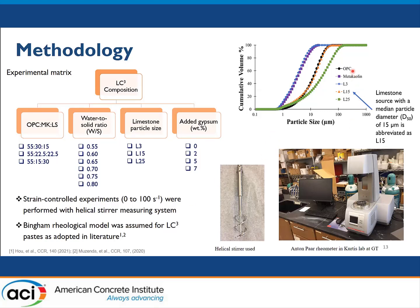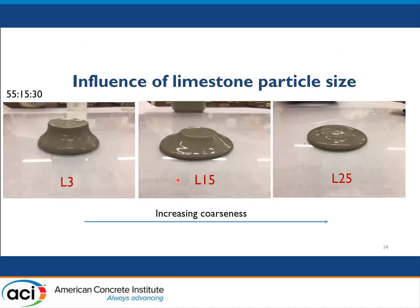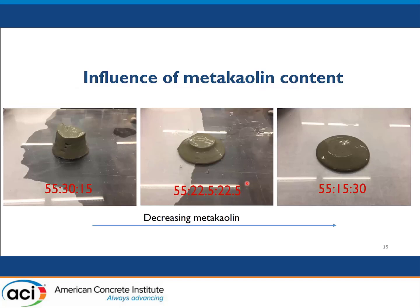The upper right figure shows the particle size distribution of OPC, metakaolin, and limestone. We have three different limestone grades: one finer than OPC, L15 which is similar to OPC, and L25 which has a coarser particle size distribution than OPC. The abbreviation L15 means the median particle diameter of that limestone is 15 micrometers. Mini-slump spread test pictures show the influence of limestone particle size — both slump and spread increase as we use coarser limestone particle sizes. The influence of metakaolin content shows a similar trend, where reduced metakaolin content produces a higher spread and higher slump.